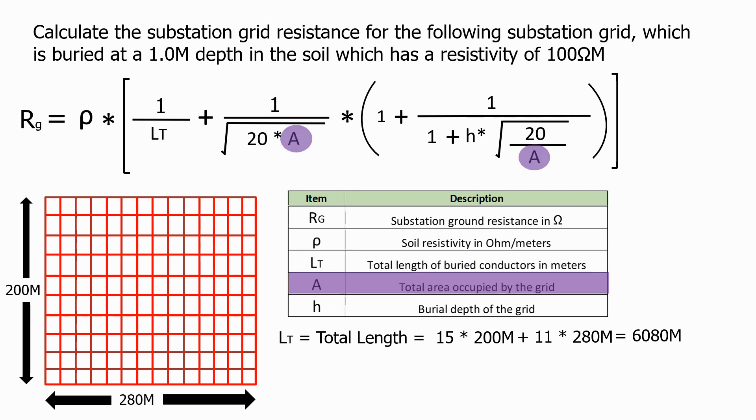Next we have A, which is the area. This is simply the width times the length of the grid, equals 200 metres by 280 metres is 56,000 square metres. The other parameters we know: h, which is the buried depth, is 1 metre. And ρ (rho), which is the soil resistivity, has a value of 100 ohm metres.